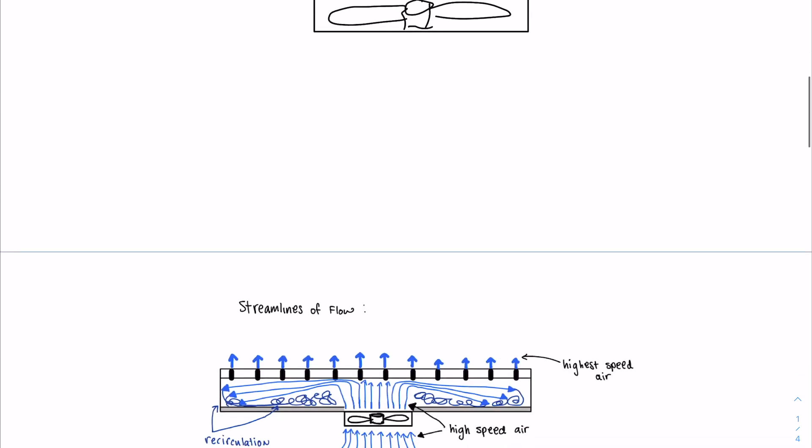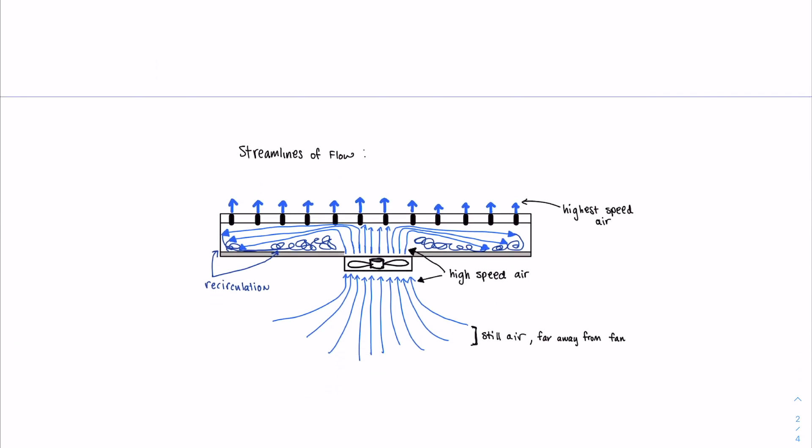If we draw a representation of these streamlines, we can see that there's two main areas of interest. The first is the fan itself, and the second is everything else, which refers to how the air will flow within the box and eventually out the holes.